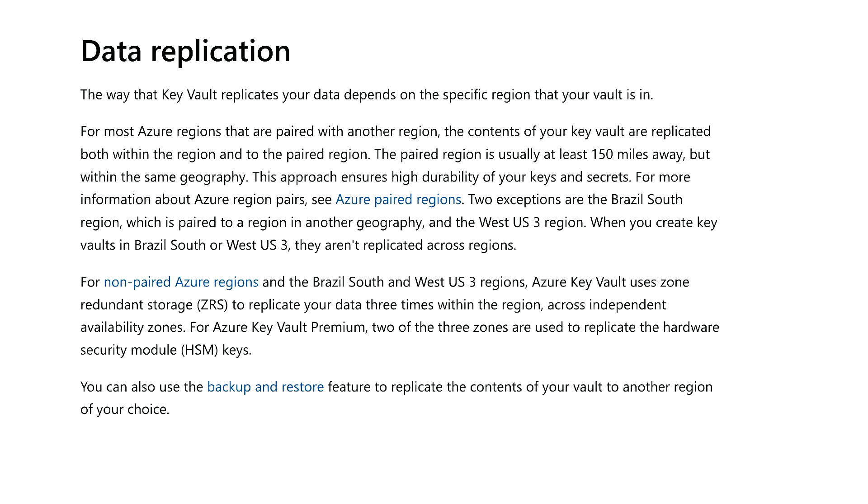Key Vault has two different tiers: the standard tier and the premium tier. The standard tier doesn't have any built-in capability. What it has is a database, for lack of a better term, and you can replicate or export the secrets and store them in a different region manually. If the region ever fails, you can recover from that backup. This is a manual process for the standard tier.